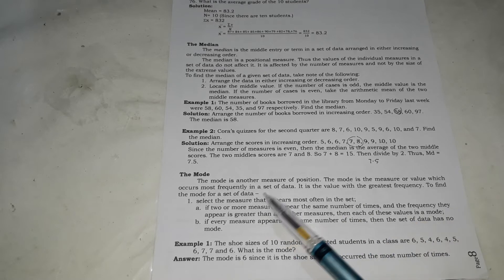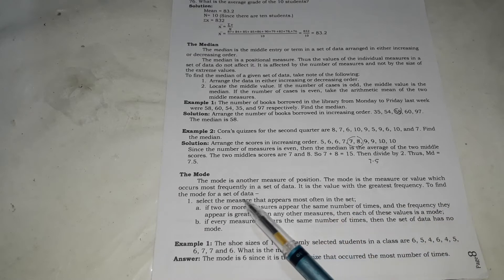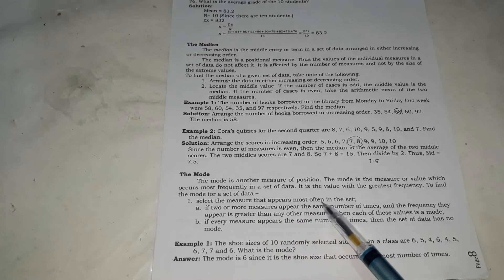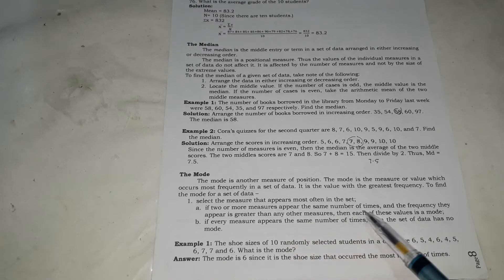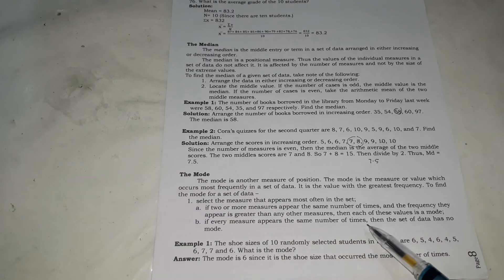The mode naman is also the easiest to identify because there is no solving. The mode is another measure of position. The mode is the measure or value which occurs most frequently in a set of data. So siyang pinakamalami. It is the value with the greatest frequency. To find the mode for a set of data, select the measures that appears most often in the subject or in the set. If 2 or more measures appear the same number of times, the frequency they appear is greater than any other measures, then each of these values is a mode. So pwede marami yung mode. Pwede isa, pwede marami. If the measure appears the same number of times, then the set of data has no mode. So halimbawa kung lahat-lahat sila walang inuulit, lahat-lahat sila pare-pareho, once lang. So walang mode.